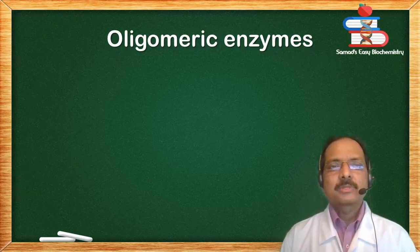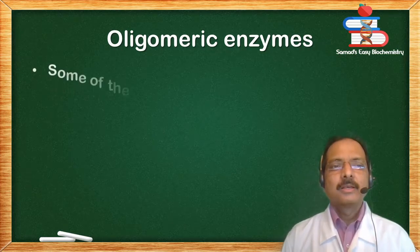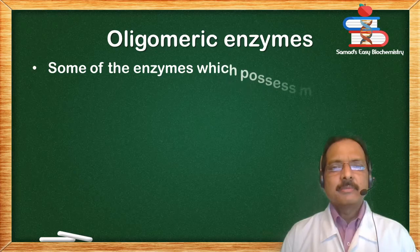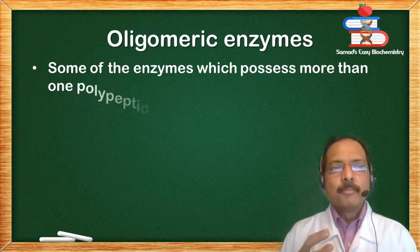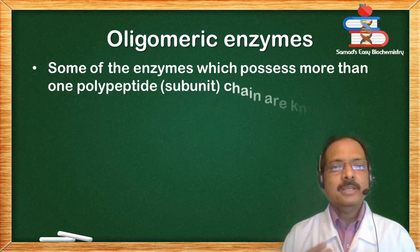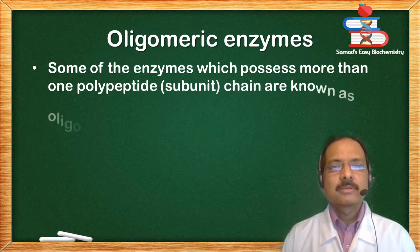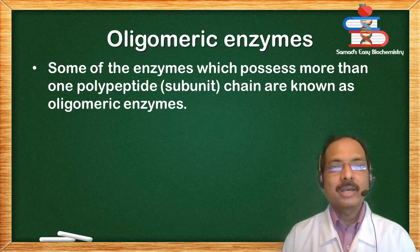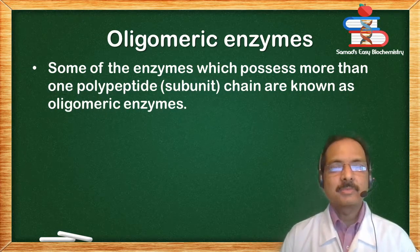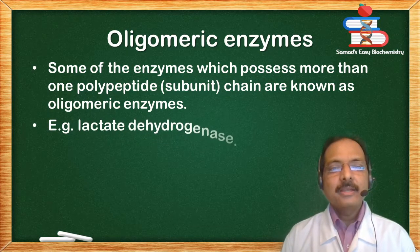Oligomeric enzymes: some enzymes which possess more than one polypeptide subunit or more than one polypeptide chain are known as oligomeric enzymes. Example: lactate dehydrogenase.